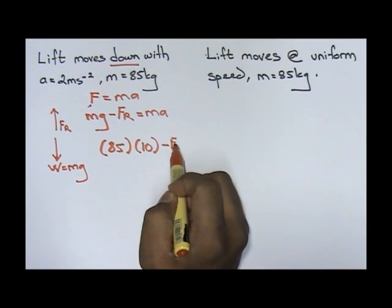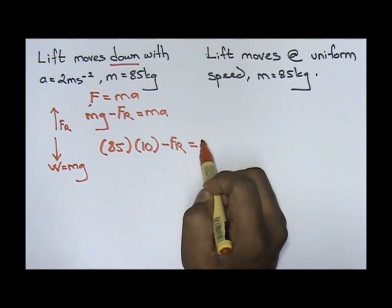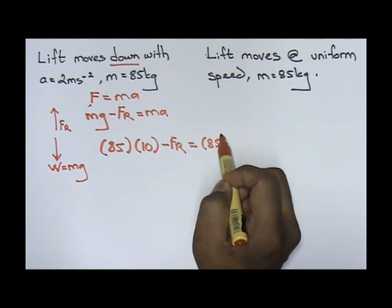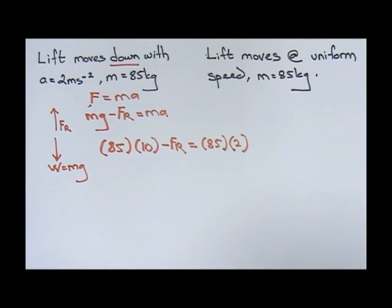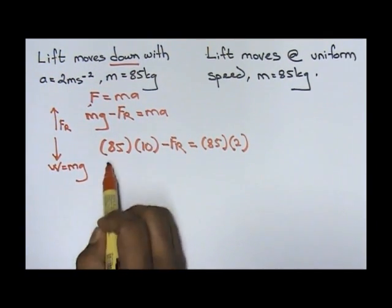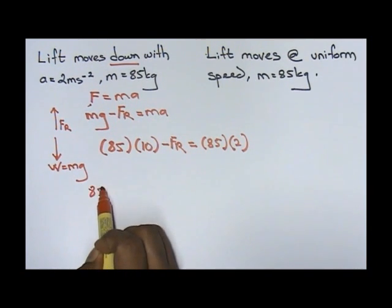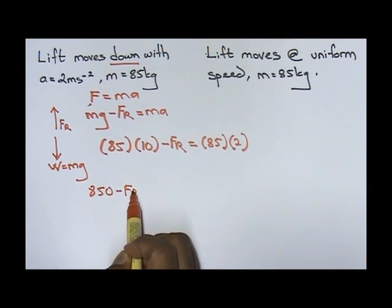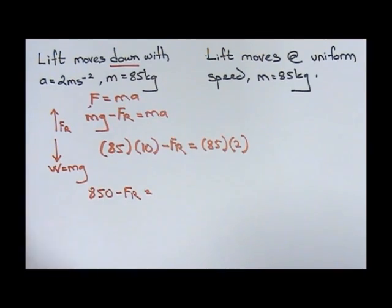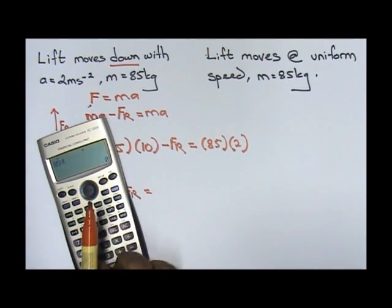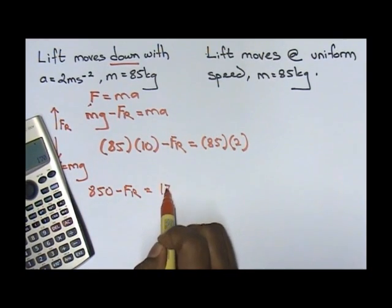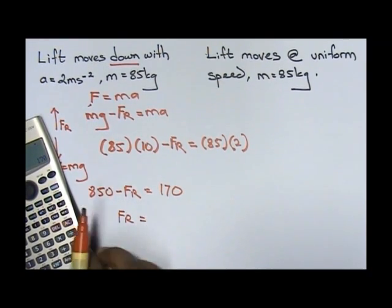Minus your FR equals to your m, 85, your a given to us 2. Now check out what happens. So you'll get 850 minus FR, 85 times 2, 170.